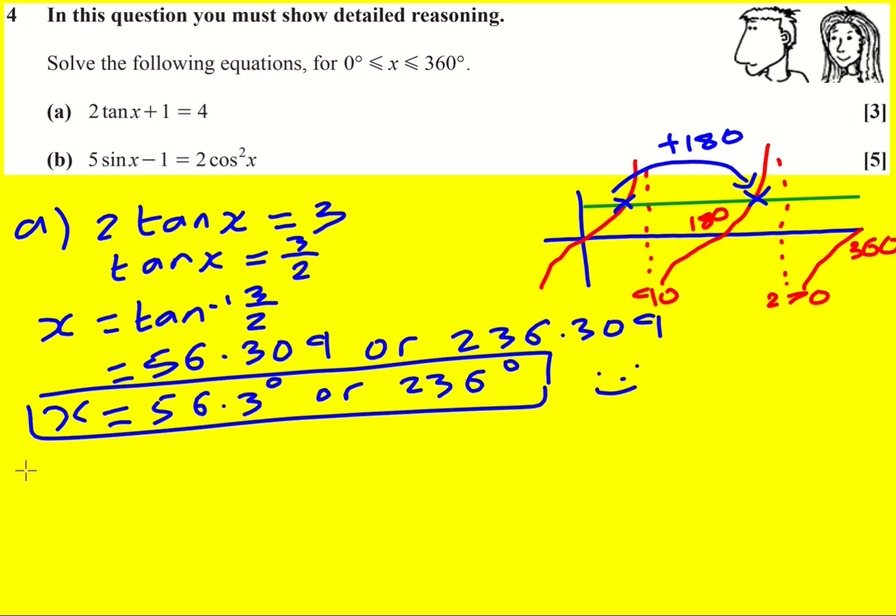Right, next part. We've got a quadratic essentially involving cos squared, but the thing is we've got a sine x in there as well. Now we can't get rid of that sine x, but what we can do is use a trig identity and replace the cos squared by 1 minus sine squared.